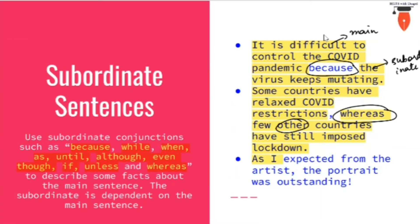Let's look at the next one: 'As I expected from the artist, the portrait was outstanding.' The main idea is 'the portrait was outstanding,' and what I expected from the artist becomes the subordinate or dependent idea. These are a few tips to keep in mind while working with more complex sentences.